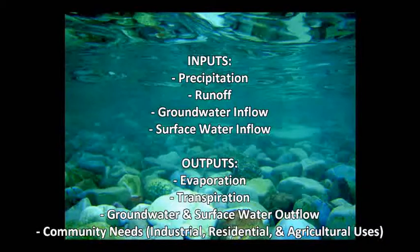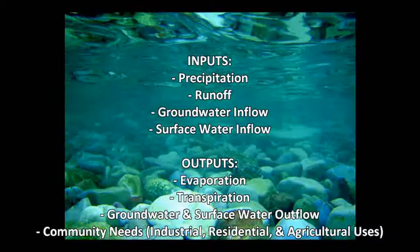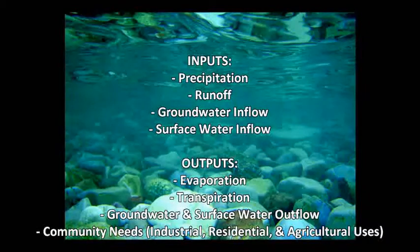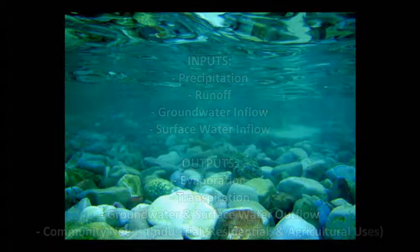Outputs include evaporation, which converts water to vapor form that re-enters the atmosphere before it reaches the soil surface; transpiration, which accounts for the water taken up by plants and then released back into the atmosphere as vapor through small pores on their leaves called stomata; groundwater and surface water outflows; and last but certainly not least, community needs, which include industrial, residential, and agricultural uses.